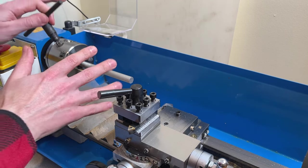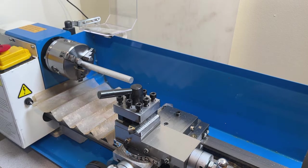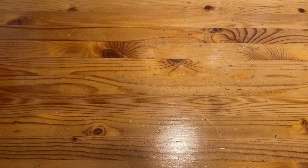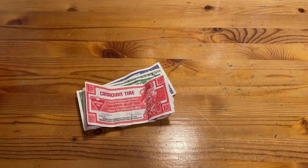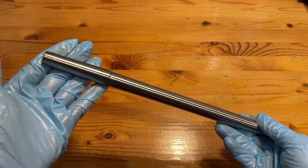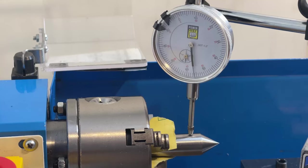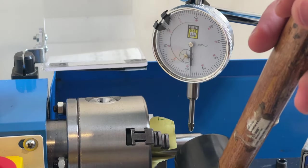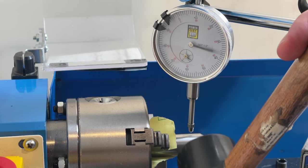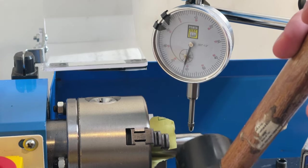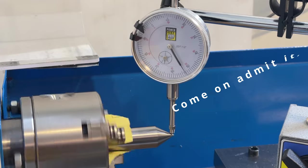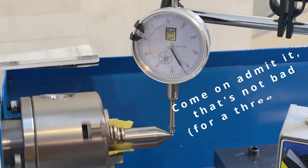Whoa whoa whoa hang on there racing stripes, before we do anything we need to get the tail stock more accurately aligned. And you know what that means, time for a new tool. This test bar should do the trick to get everything aligned. I don't have a Morse Taper 3 dead center though, so I had to make do with putting the Morse Taper 2 dead center that I have into the chuck, and then spending a slightly annoying amount of time carefully tapping it into place.